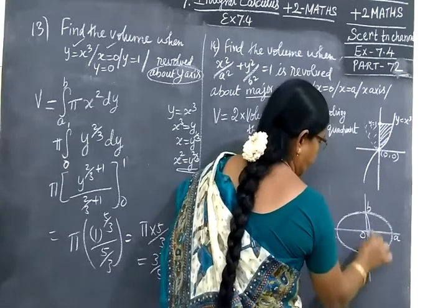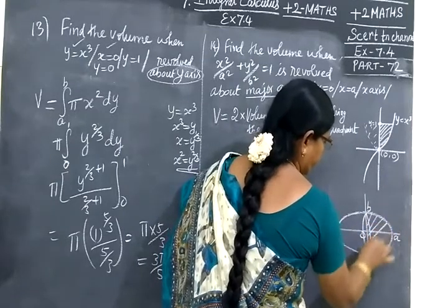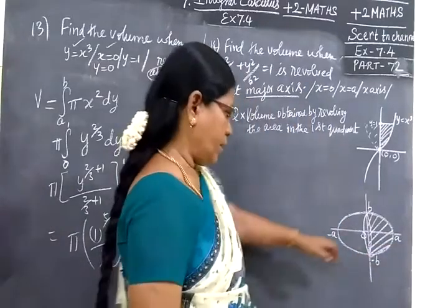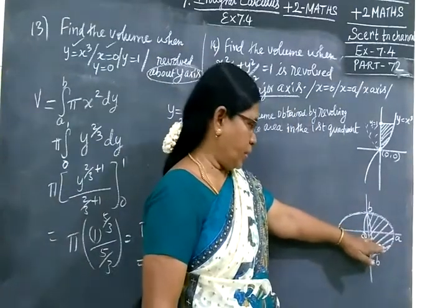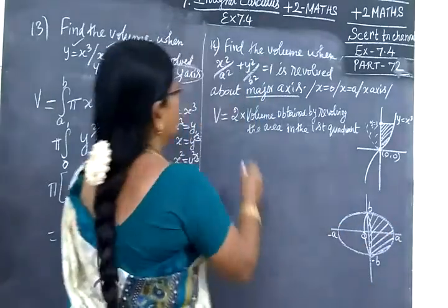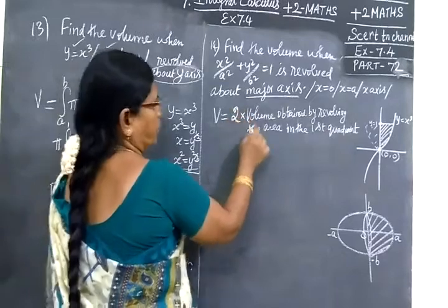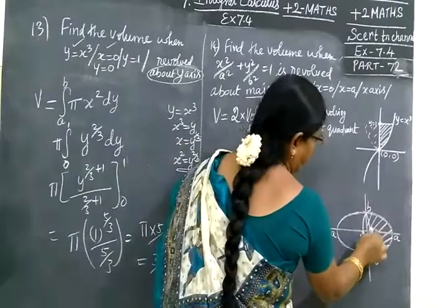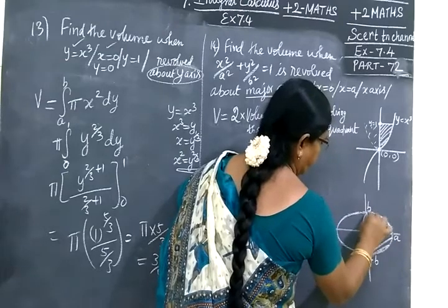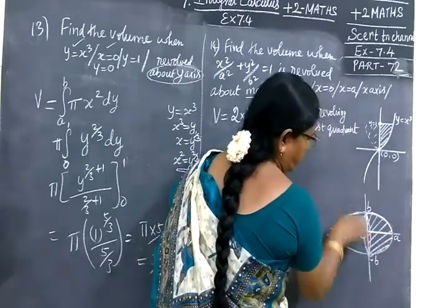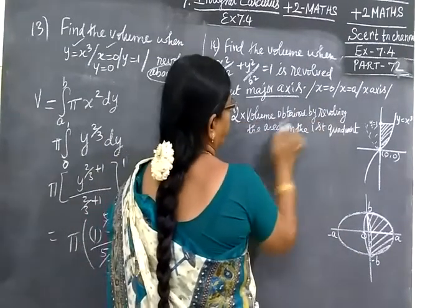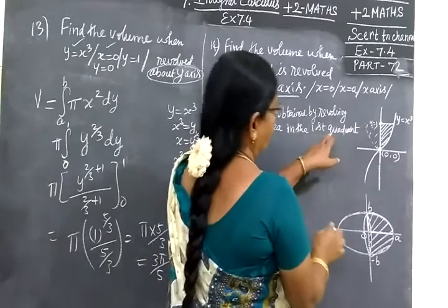The major axis is revolving about the major axis. The major axis means the x-axis. With respect to the x-axis, it revolves. So we're getting the volume. We take 2 times, because in the first quadrant, when we revolve it, the fourth quadrant also revolves. So two times the volume obtained by revolving the area in the first quadrant.